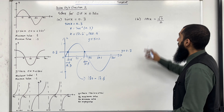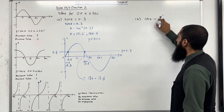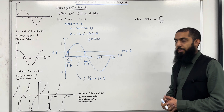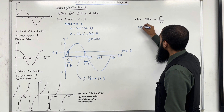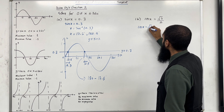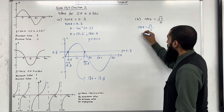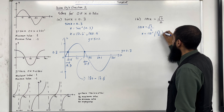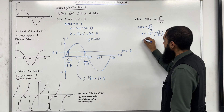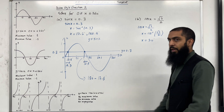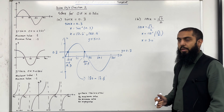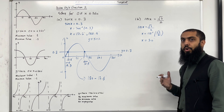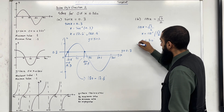Moving on to part B: solve cos x equals square root 3 over 2. I'm going to start by rewriting the trigonometric equation. Taking cos inverse of square root 3 over 2, x is equal to 30 degrees. To find the other solution for x in this given interval, I need to sketch the graph for y equals cos x. I also sketch the graph for y equals square root 3 over 2, which is close to 1.